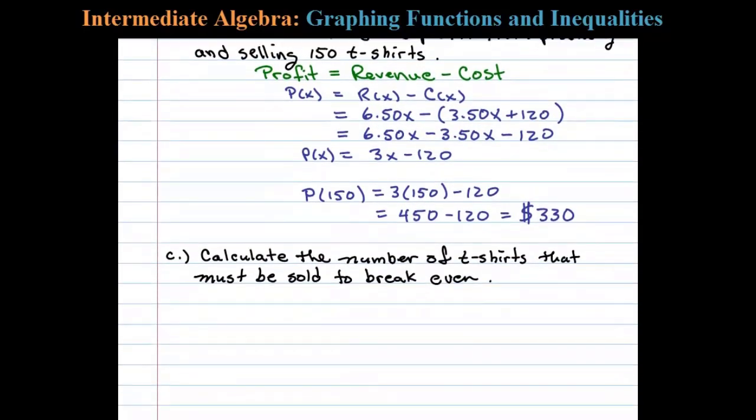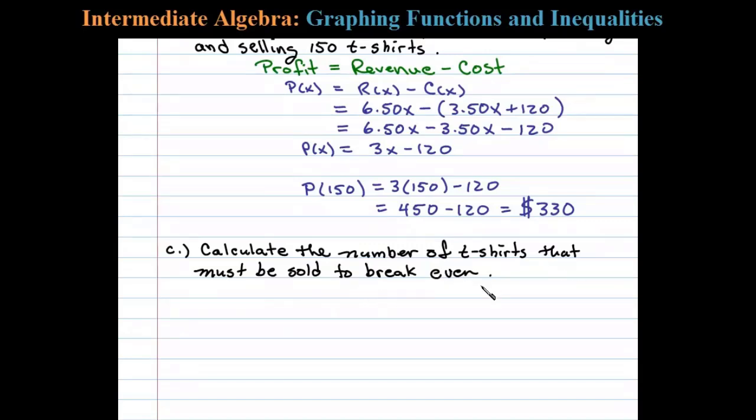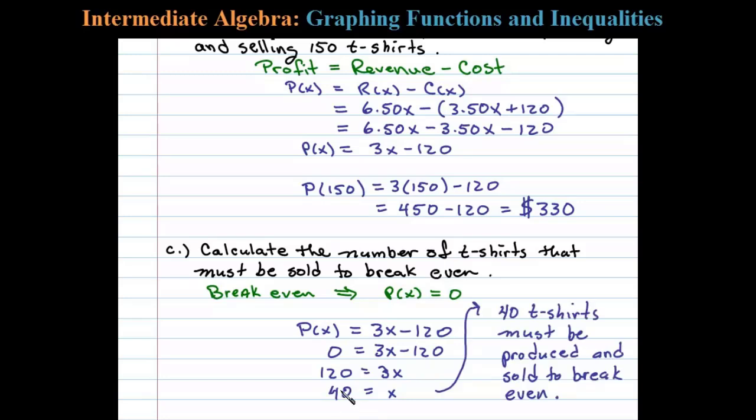Next, we're asked to calculate the number of t-shirts that must be sold to break even. To break even, profit is equal to 0. We found that our profit function was equal to 3x minus 120. We'll substitute 0 in for the profit and then solve for x. Adding 120 on both sides, we have 120 equals 3x. Dividing both sides by 3, we have x equals 40. Therefore, 40 units must be produced and sold to break even.